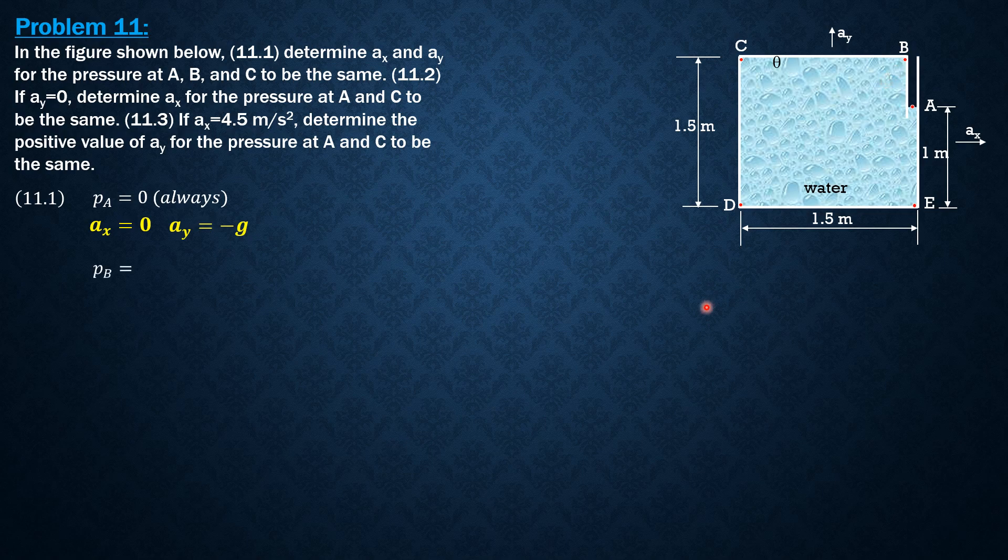So 9.81 times negative 0.5 times quantity 1 plus AY over G. But AY should be negative G so that 1 plus negative G over G is 0. So that pressure at B is 0.